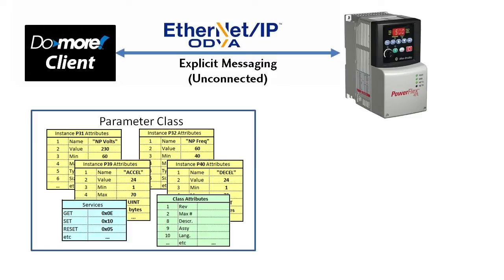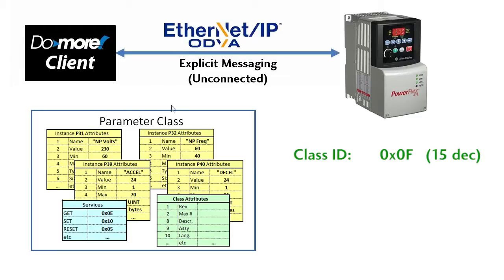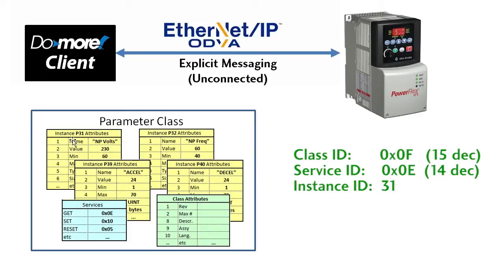Suppose we want to get the value of parameter 31. We look up the manual and find that the parameter class is number 15 (0x0F hex), the get service code is 0x0E, the instance we want is number 31 — parameter 31 — and the attribute we want is number 2, the value. We simply hand those numbers to the explicit message instruction and it fetches the value of that parameter for us.